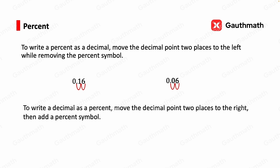To write a decimal as a percent, move the decimal point two places to the right, then add a percent symbol. For example, 0.36: move the decimal two places to the right, so 0.36 equals 36%. Another example: 2.06 — move the decimal two places to the right, so 2.06 is 206%.